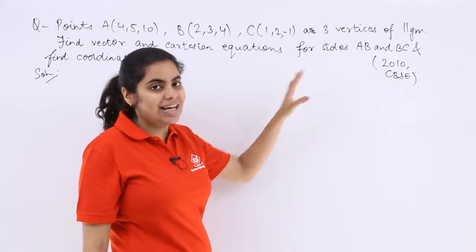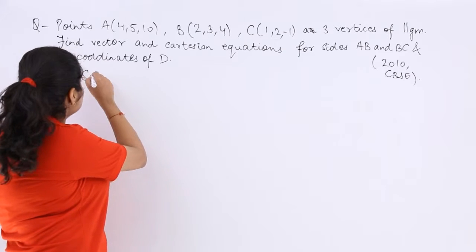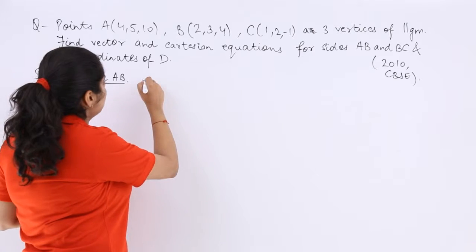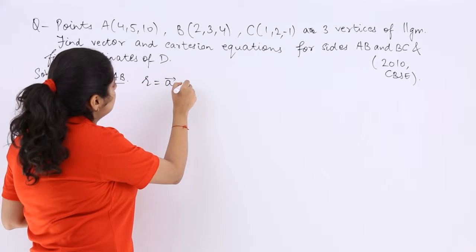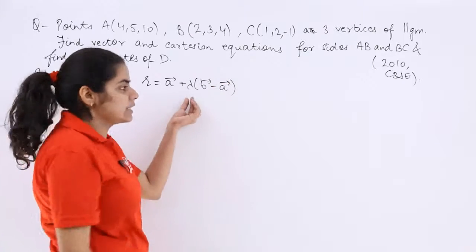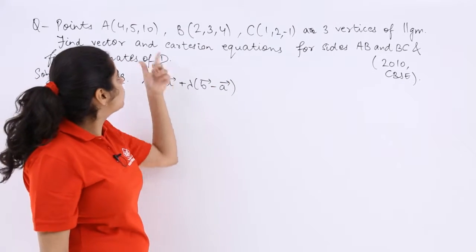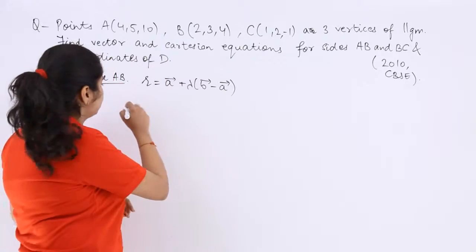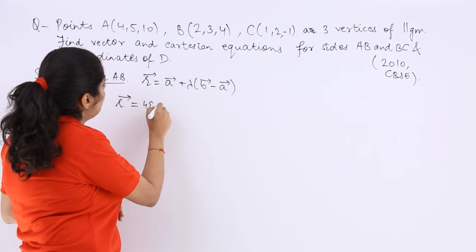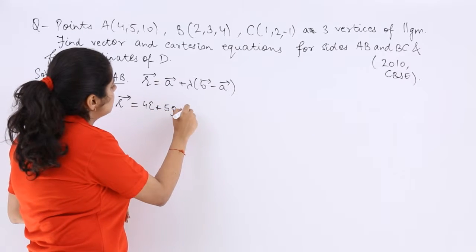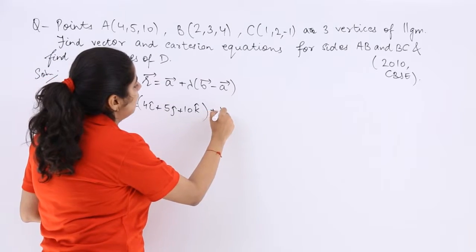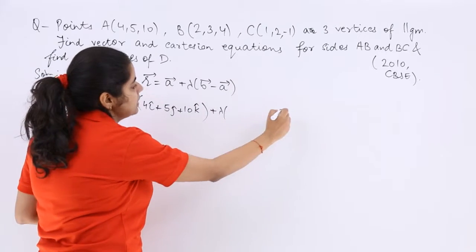ABC have been given to you. Let's take into consideration the side AB. Now for this side AB, I know R is equal to A vector plus lambda B minus A vector. Lambda is a scalar. Now A vector is what? Found out by this point A. So R is equal to 4i cap plus 5j cap plus 10k cap. Till here I hope you can comprehend.